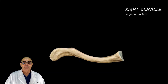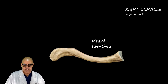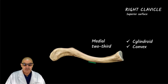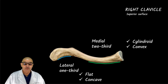Let's look at the more detailed features of this clavicle bone. For convenience, we learn the clavicle in two parts, but they are not equal — we divide it into medial two-thirds and lateral one-third. The medial two-thirds is cylindrical and convex anteriorly. The lateral one-third is flat and concave anteriorly. So, medial two-thirds is convex and lateral one-third is concave.